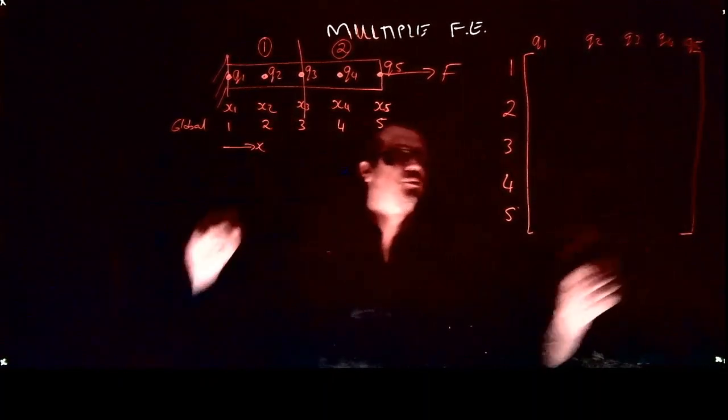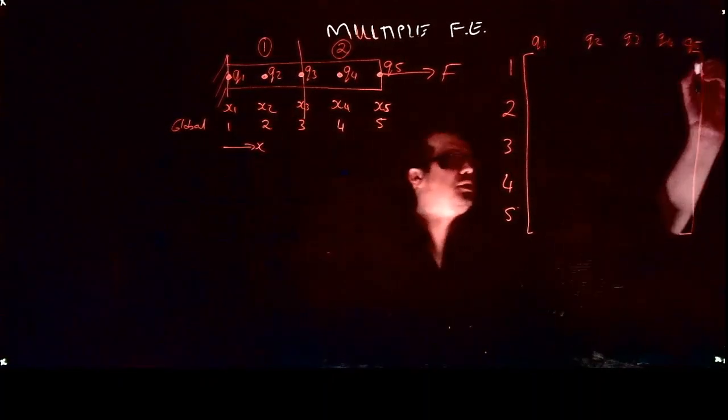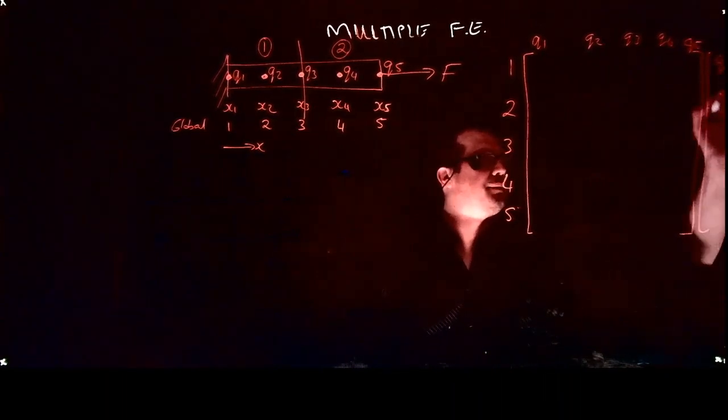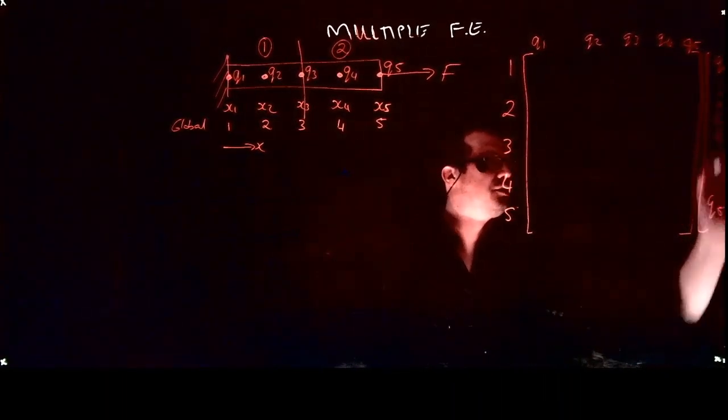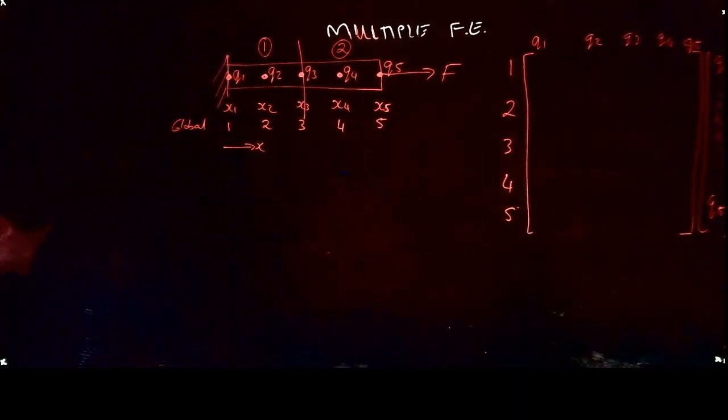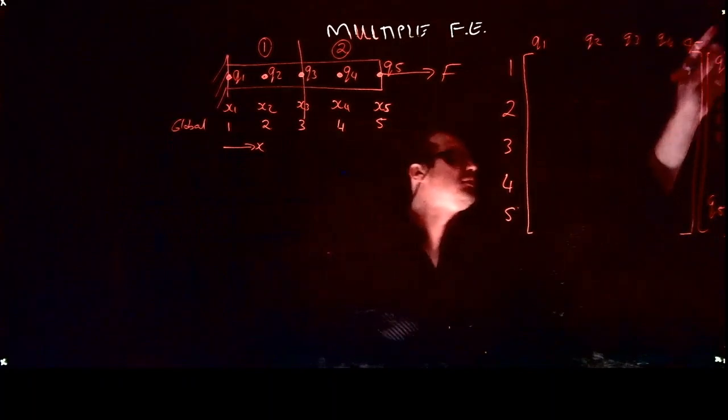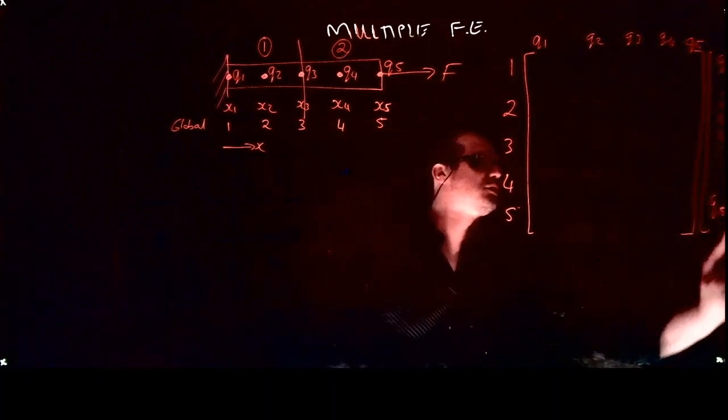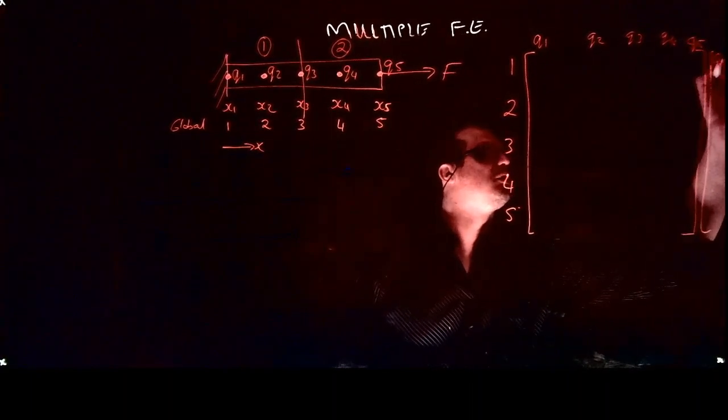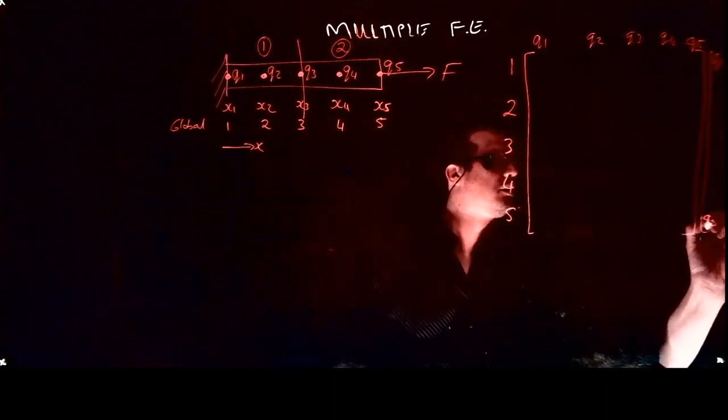That's what we have with those unknowns there. Obviously, we'll multiply this with the vector of q1 up until q5 as the unknowns. So all that I've written is the vector from q1 to q5.